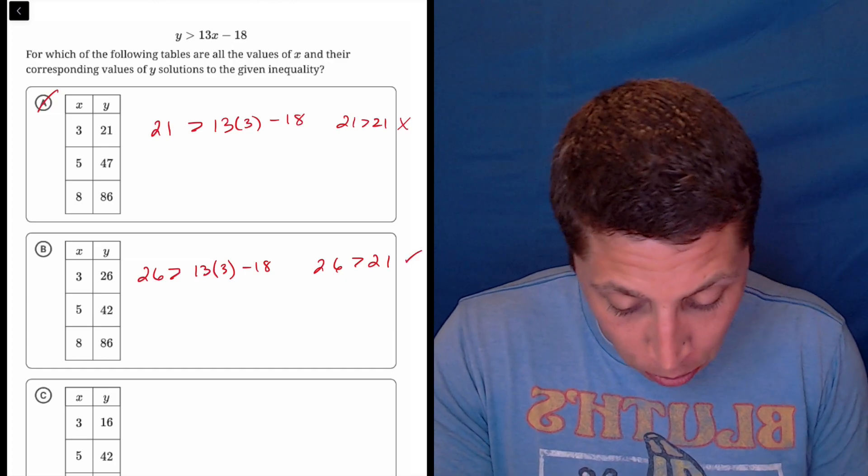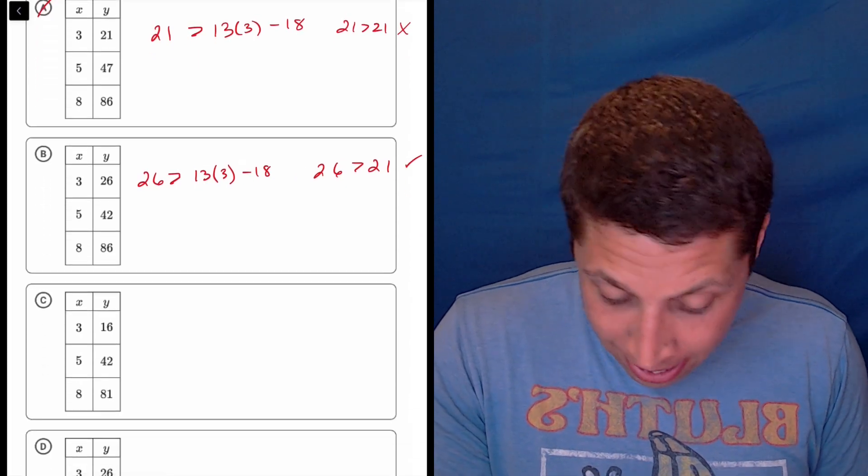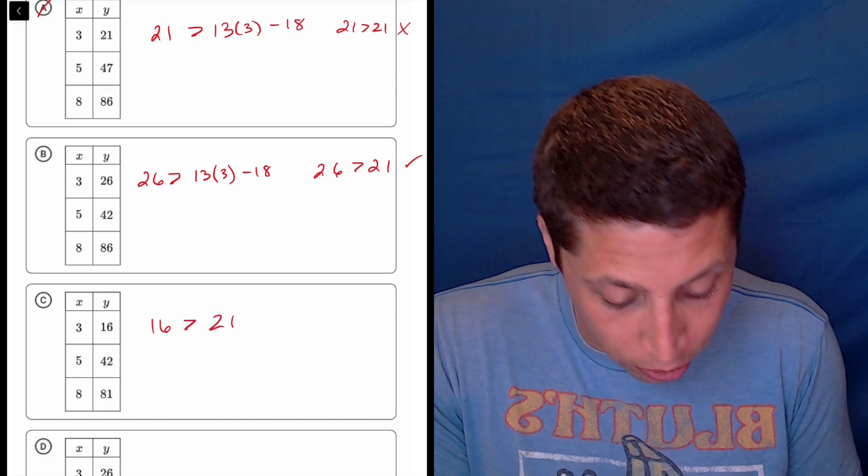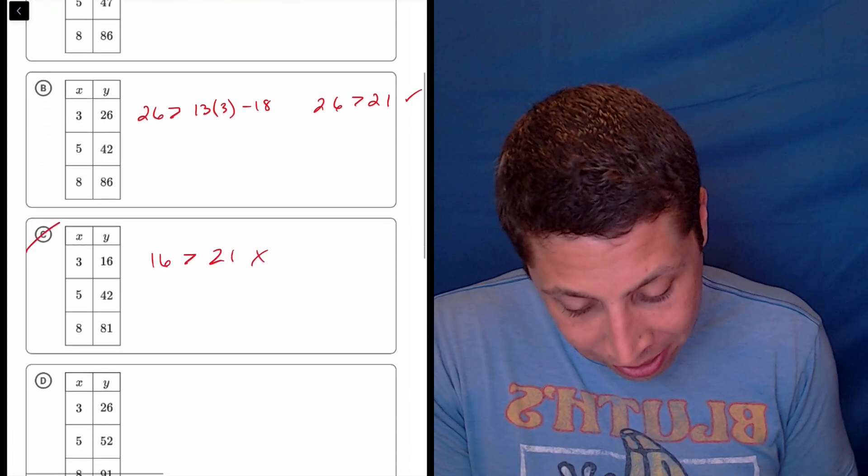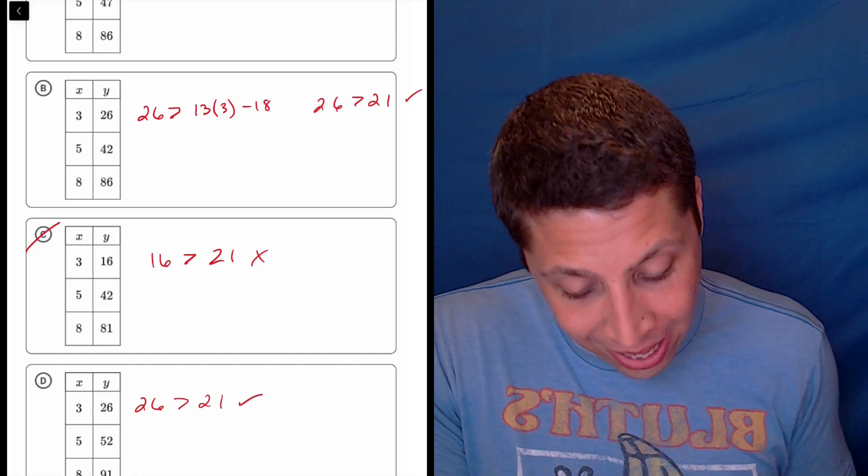I guess at this point I would try—I mean, it's so easy to see why C is wrong because 16 is not greater than 21. So that gets rid of that. But choice D also has 26 is greater than 21. So that checks out.